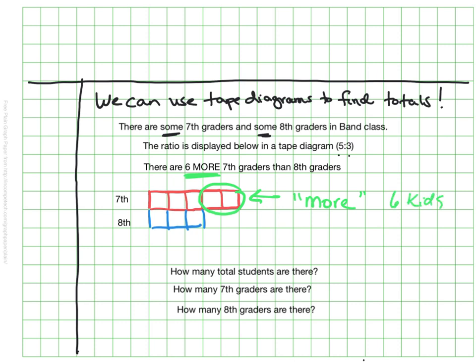So these two squares equal six which means one of these little squares must equal three because those are the two extra, the two boxes that are on the seventh grade line that are not on the eighth grade line.